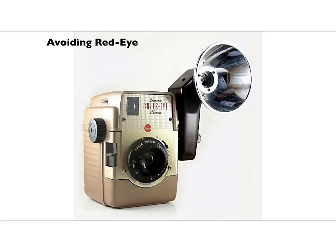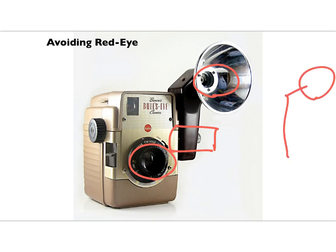The same idea applies to cameras. If you have a camera with the flash right next to the lens, you're going to get red eye — a reflection from the back of people's retinas. For people it's not so bright and it appears red. What you can do is unscrew the camera flash and put it off to the side, and if the flash is held off to the side you get a lot less red eye in your photos.